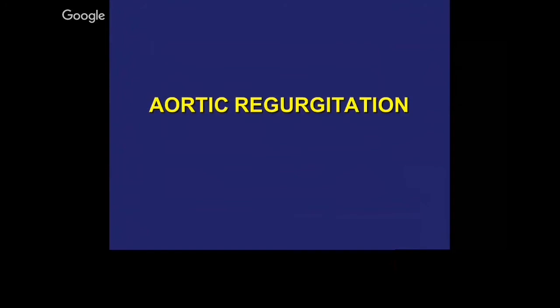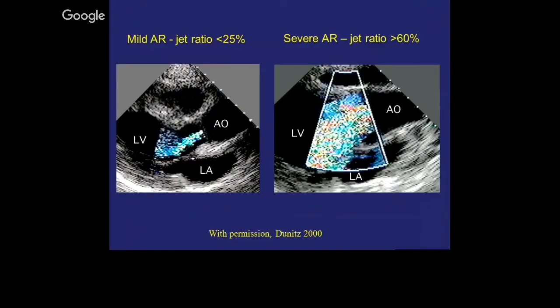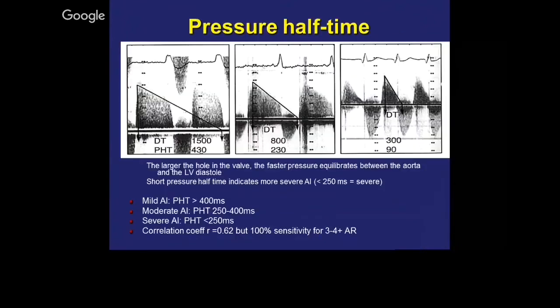For aortic regurgitation, using the same concept as mitral regurgitation, we look at the size of the jet in relation to the diameter. The jet ratio — if it's less than 25% it is mild. If the jet is filling the whole extent of the LVOT, this is obviously wide open aortic regurgitation. The ERO is not as robust for aortic regurgitation as it is for mitral regurgitation.